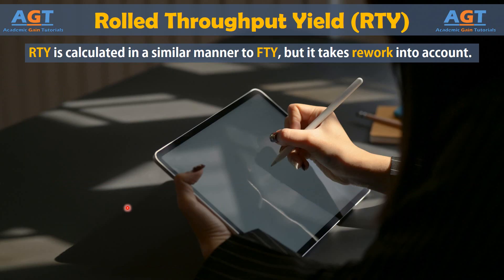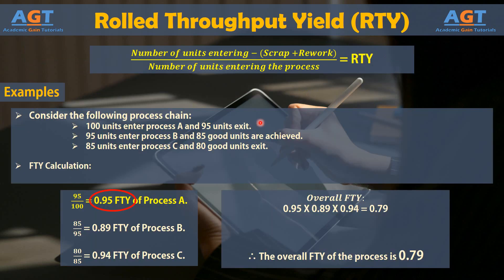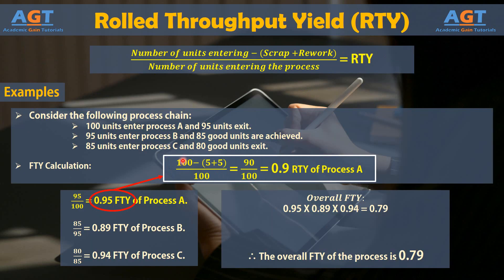The formula is: the number of units entering, minus scrap plus rework, divided by number of units entering the process. In the case of process A, the number of units entering is 100, minus 5 scrap plus 5 reworks, divided by 100. That gives 90 divided by 100, equals 0.9.